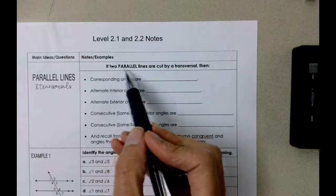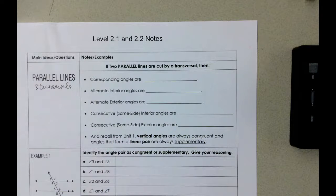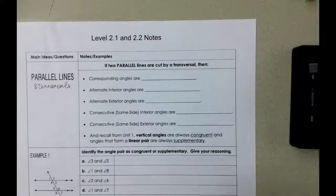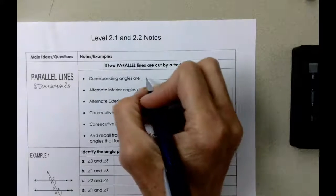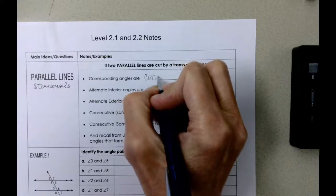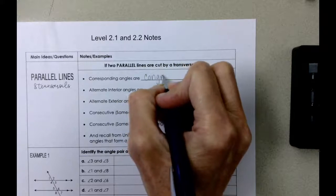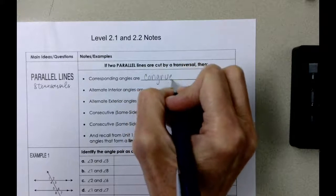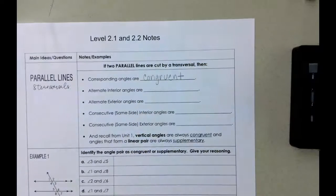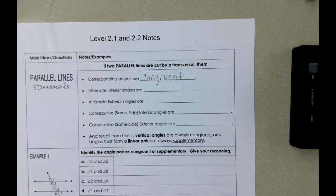If two parallel lines are cut by a transversal, corresponding angles are congruent. Remember that corresponding angles lie in the same place with respect to the parallel line and the transversal.